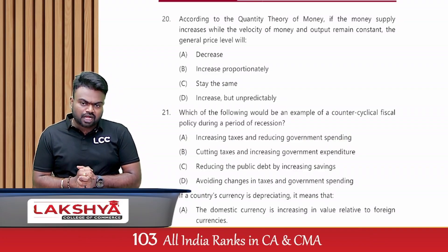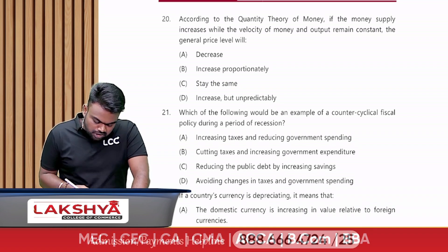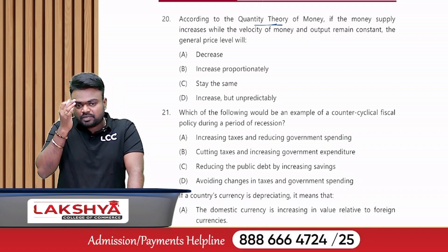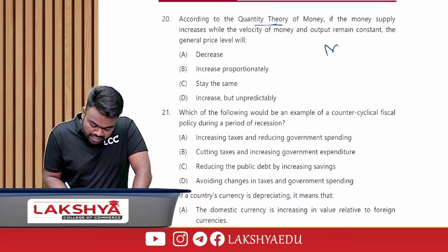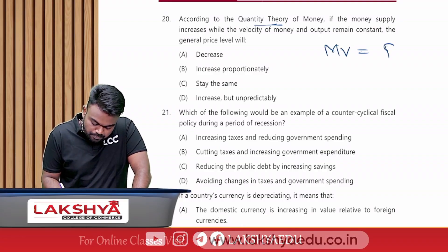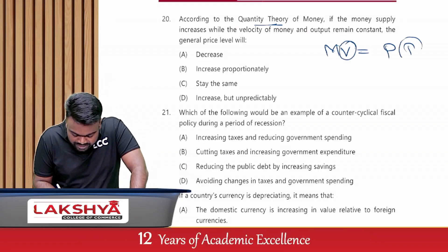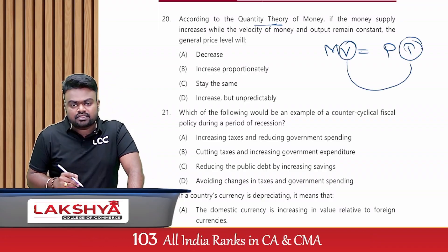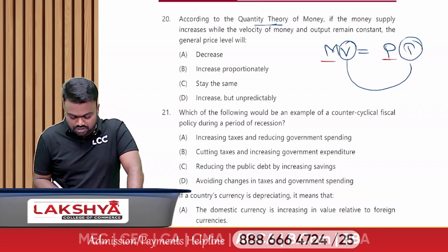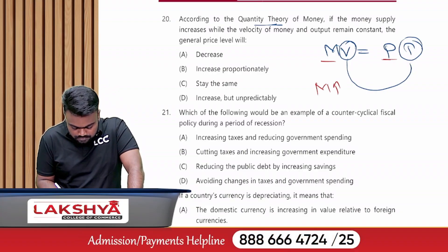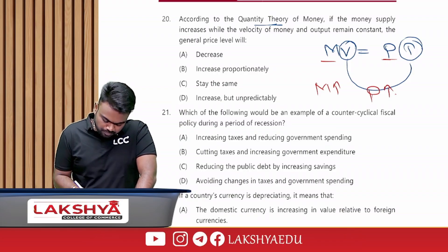According to the Quantity Theory of Money, if money supply increases while velocity of money and output remain constant, what happens to the general price level? This concept was given by Irving Fisher: MV = PT. If velocity (V) and output (T) are constant, then when M increases, P also increases in the same proportion. The answer is option B.